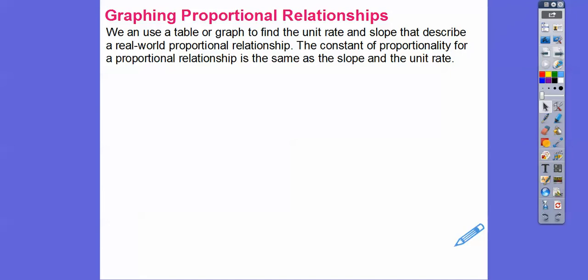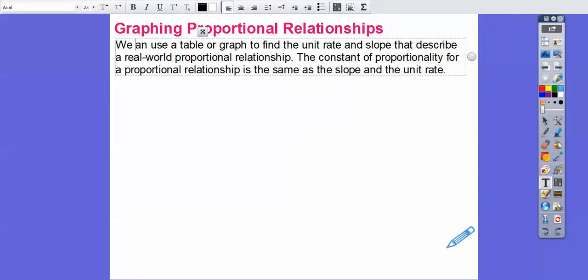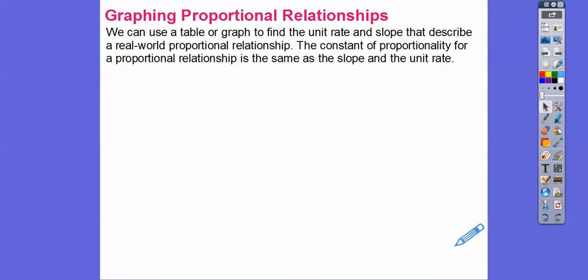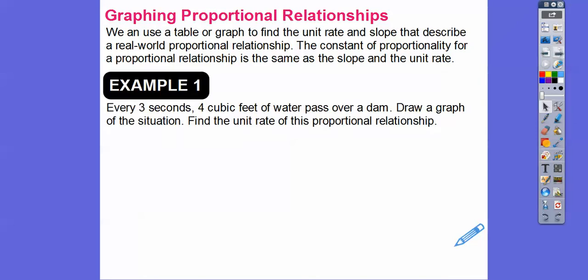So we're going to graph proportional relationships. We can use a table or a graph to find the unit rate of change and slope that describes a real-world proportional relationship. The constant of proportionality for a proportional relationship is the same as the slope, which is the same as the unit rate of change. Every three seconds, four cubic feet of water pass over the dam.